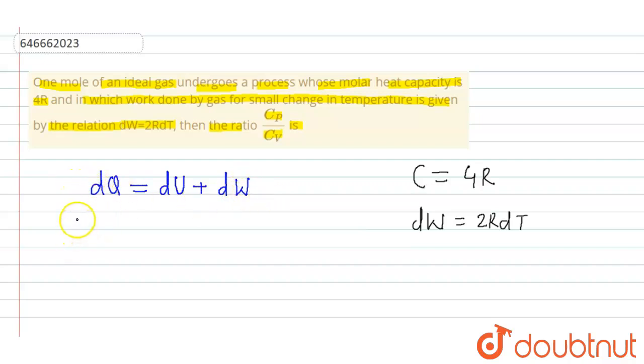Now since dQ is Nc of the process into dt is equal to du is Ncv into dt plus dw, dw is given 2R dt.